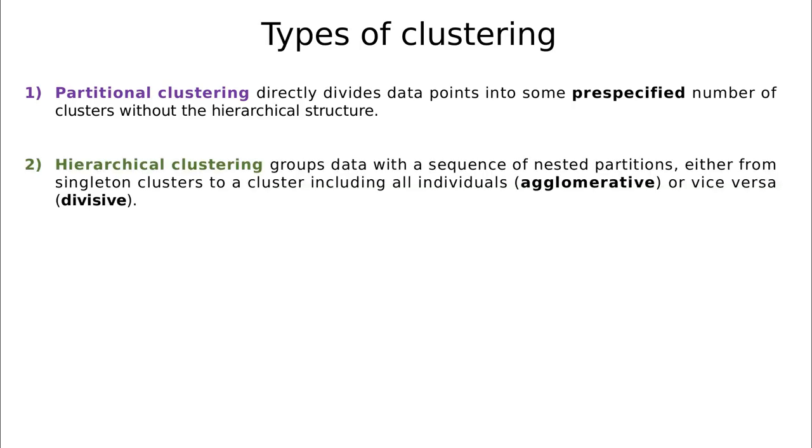The second type of cluster is called hierarchical clustering. This is largely different from partitional clustering in the sense that we can start with all individuals in one group and then divide that group into subgroups, or the other way around. We can start with independent observations and then try to group them together according to some criterion.